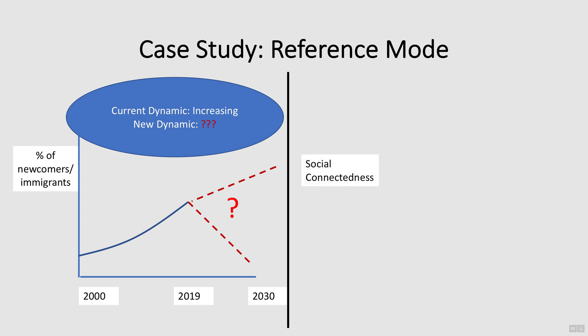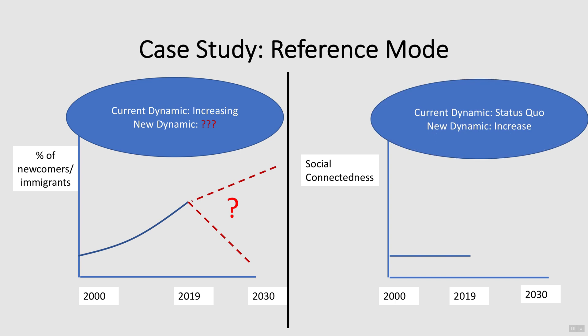Another variable suggested was social connectedness. It was suggested that the social connectedness of this neighbourhood had been low for a long time. Now this suggests a status quo pattern that we want to change. After some discussion, the group decided that social connectedness was the problem of interest that they want to map.